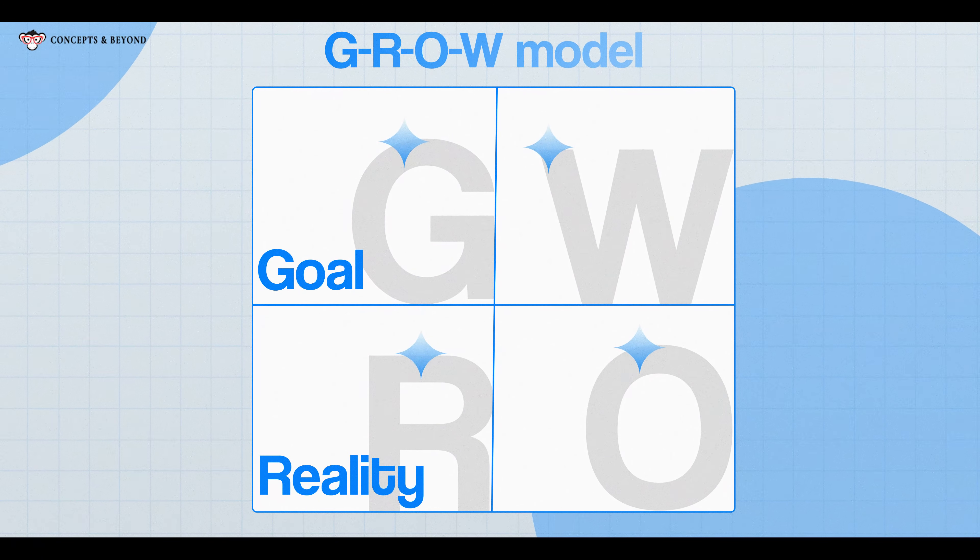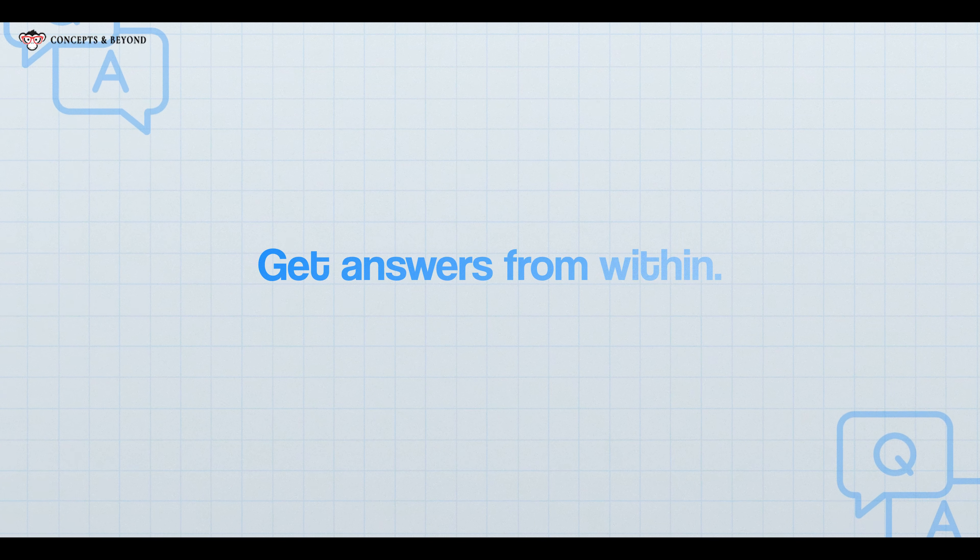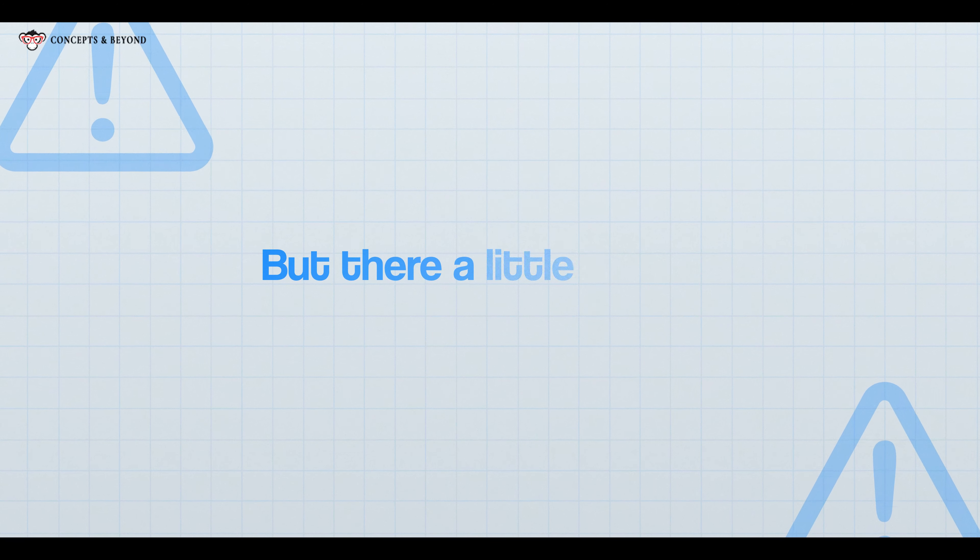The R stands for reality. Now that you know the goal, this is the time to ask powerful questions. Powerful questions are questions that start with what, where, or how. When you ask such questions, they're going to be forced to look within themselves and question their reality and get answers from within. You can also ask questions starting with why, but they're a little dangerous — it might make the other person defensive or they might feel that you are judging them.